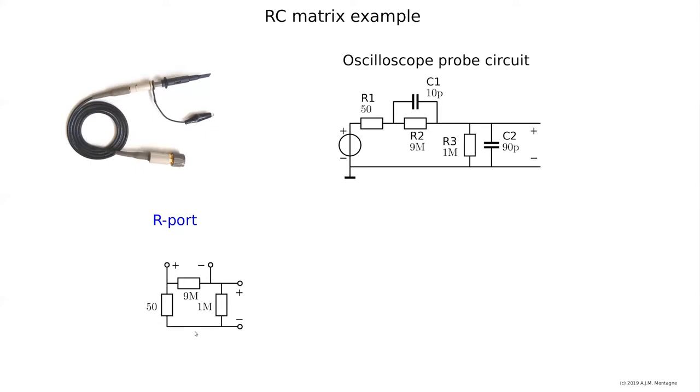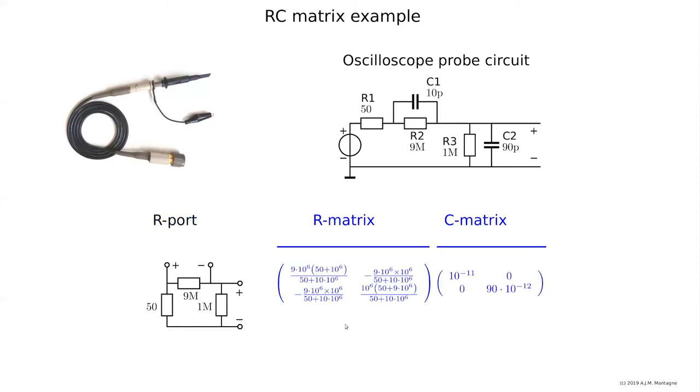The R-matrix—we can now calculate it. You can put an ohmmeter there or calculate it. Let's say, what will be the on-diagonal resistance of port one?